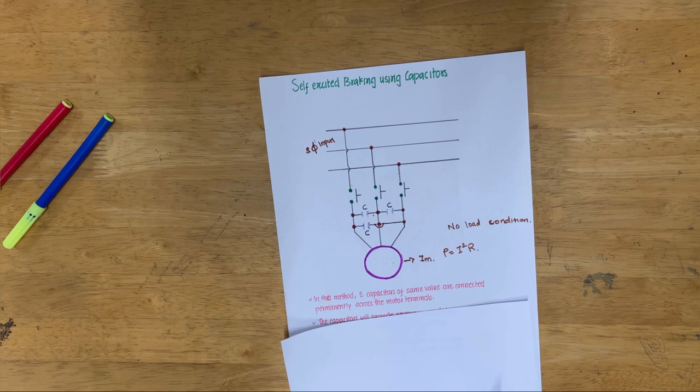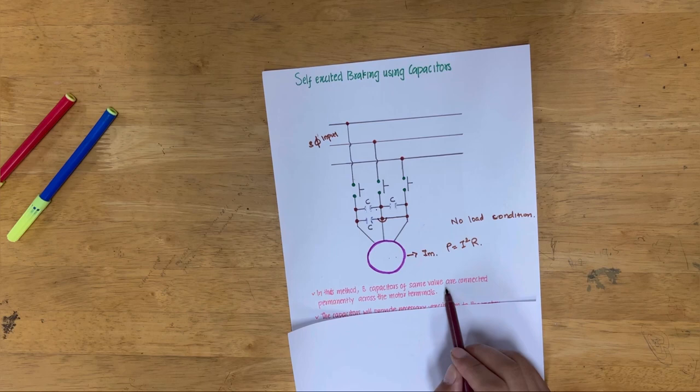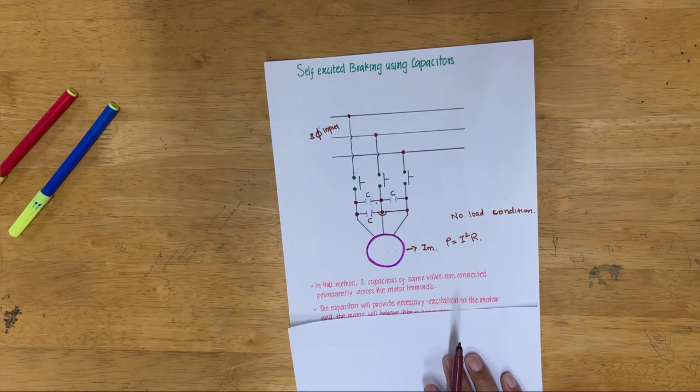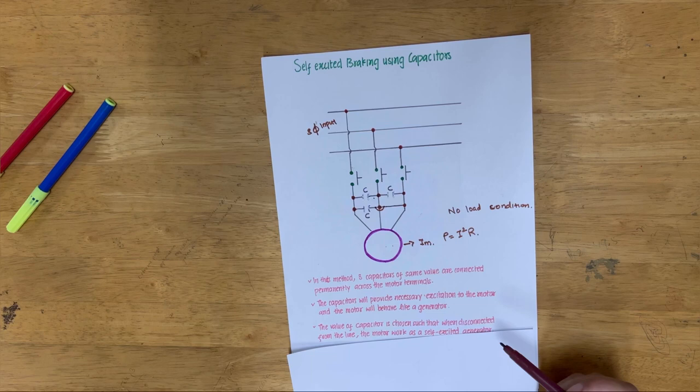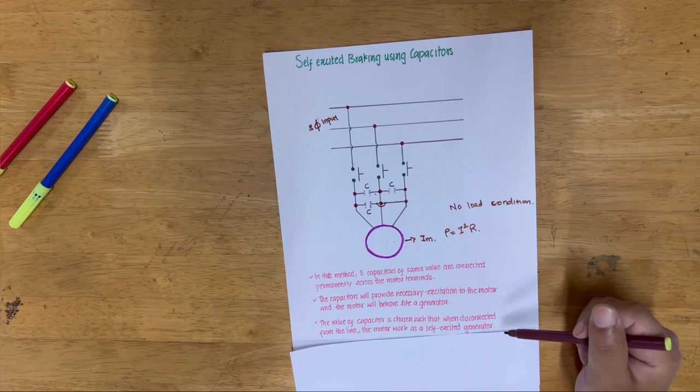In this method, we use two capacitors of the same value connected permanently across the motor terminals. The capacitors will provide necessary excitation to the motor, and the motor will behave like a generator. The value of the capacitor is such that when disconnected from the line, the motor works as a self-excited generator.